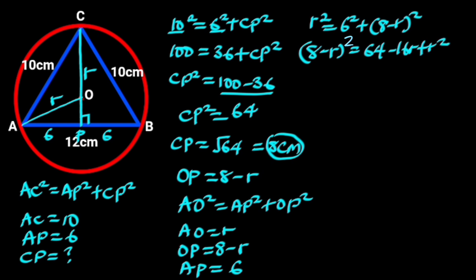Substituting 8 minus R with this value will give us R square equals 6 square plus 64 minus 16R plus R square. 6 square is 36, which follows that R square equals 36 plus 64 minus 16R plus R square.